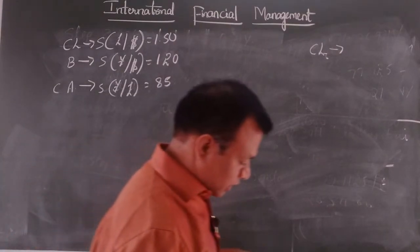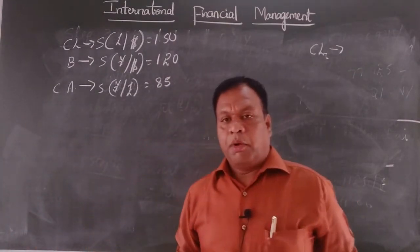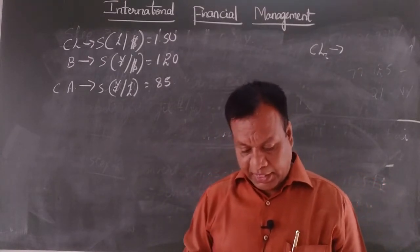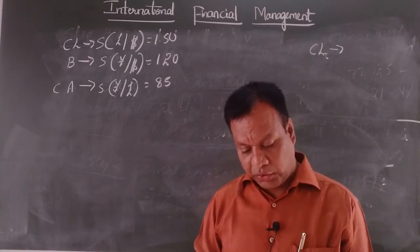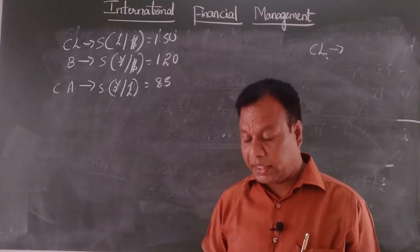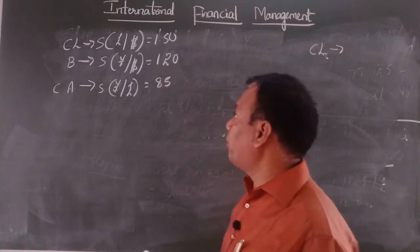All of you might have read the problem. So the problem, what they are given is, in case of Credit Suisse bank, spot rate of pound by dollar, they are given as 1.50.